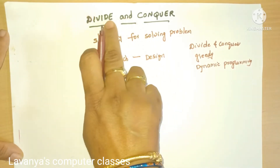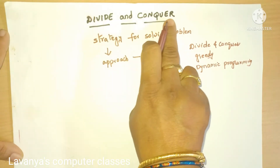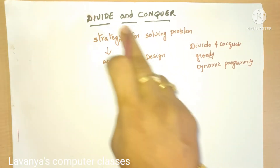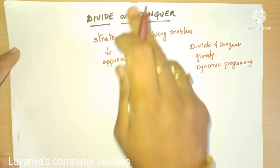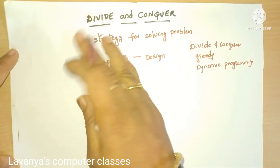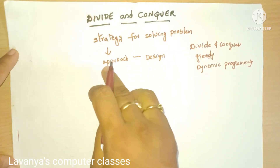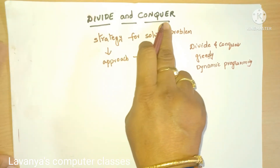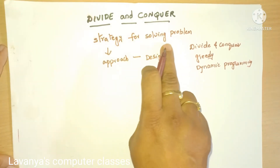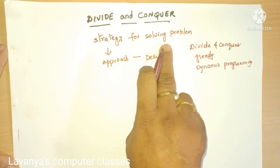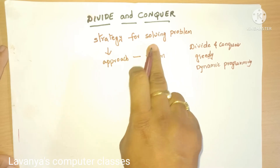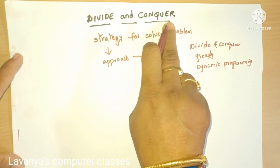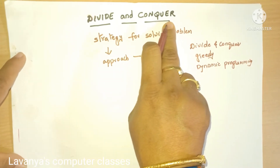Now let's go to the explanation of the divide and conquer method. In the name itself it is there: divide means it is divided into sub-parts. Conquering means win or solution — if you are solving the problem and ultimately getting the answer, that means you are conquering the problem. That is known as conquer.